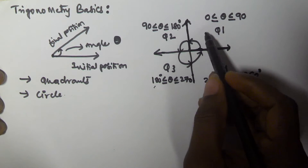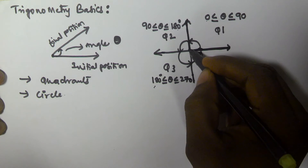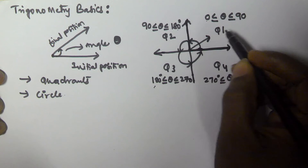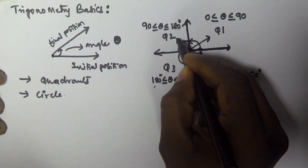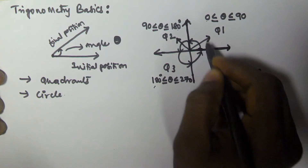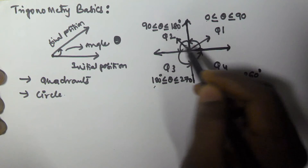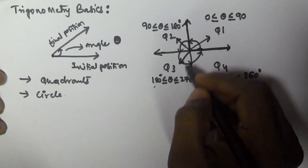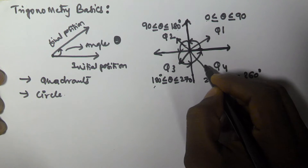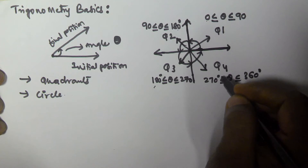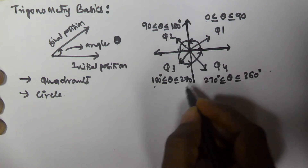If the given line is in the first quadrant, the angle is going to be between 0 to 90. If the line is in the second quadrant, the angle is going to be between 90 to 180. If the line is in the third quadrant, the angle is between 180 to 270. If the line is in the fourth quadrant, the angle is going to be between 270 to 360.